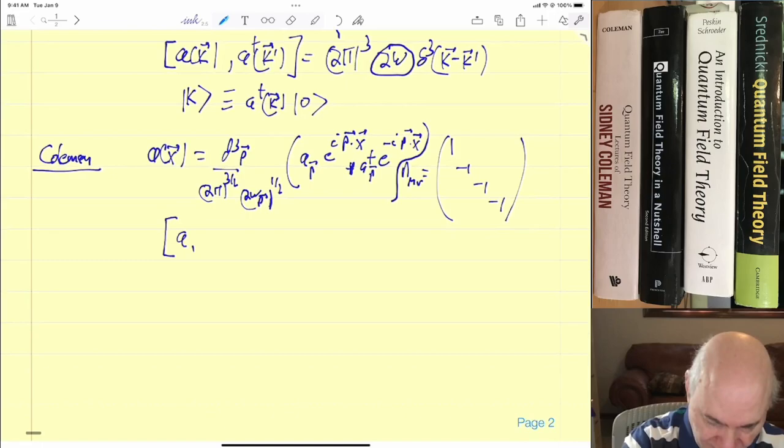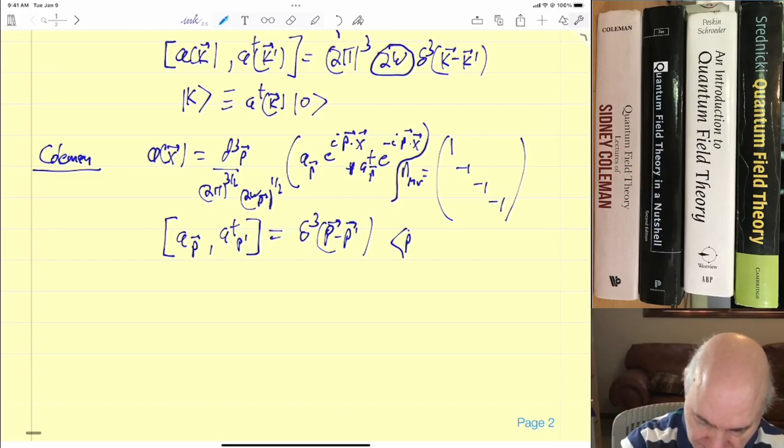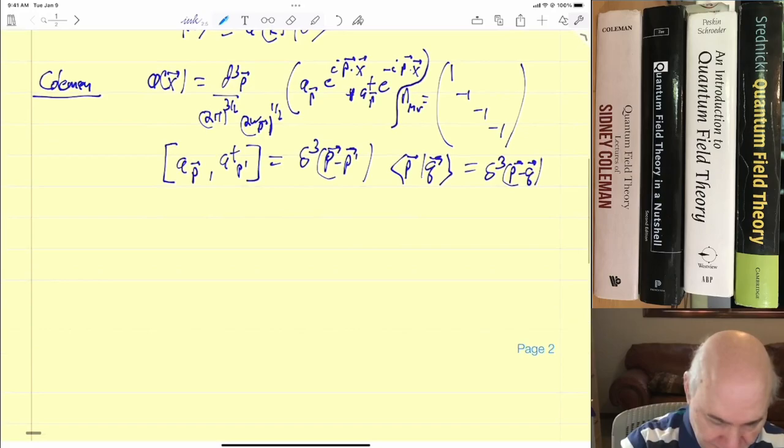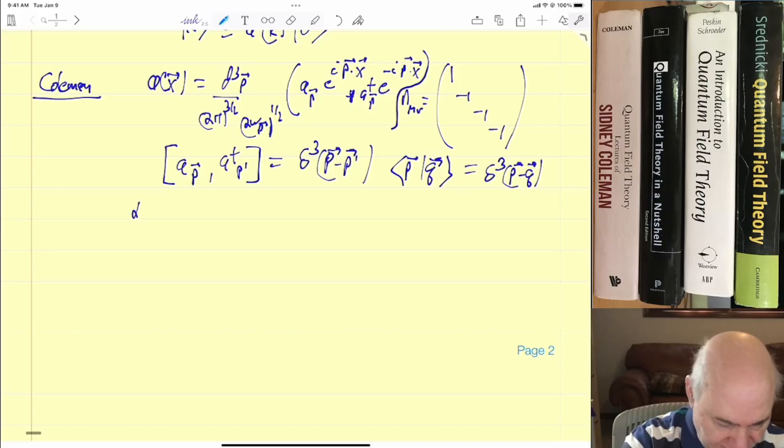Where Sridnecki has the full relativistic measure, and Peskin and Schroeder has a square root but not a square root in the 2π. So you can see he's going to have a different commutation. His commutation is [ap, a†p'] equals δ³(p-p'). No factors.